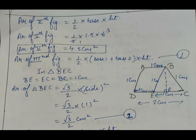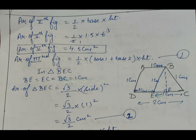Now come to figure number 3. This is one of the important figures, and by using the method for this figure, we can solve question number 9 of exercise 12.2. The area of the third figure uses the formula: half × (base1 + base2) × height, as this figure is in the form of a trapezium. We draw a line to divide it into a parallelogram and a triangle.